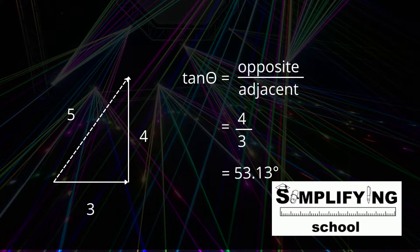So, we can say tan theta is equal to 4 over 3. And when you calculate that, you will get the direction of the resultant.